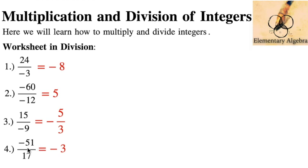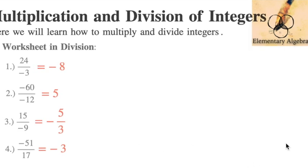Note: 51 is often mistaken for a prime number. A prime number has only 1 and itself as factors. However, 51 has 17 as a factor, so it is not prime. Keep that in mind when counting prime numbers.